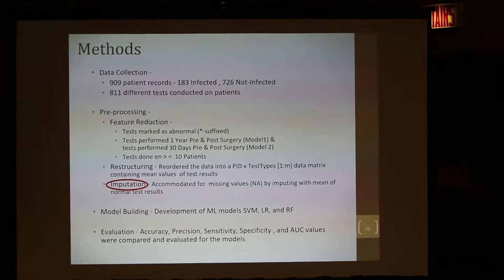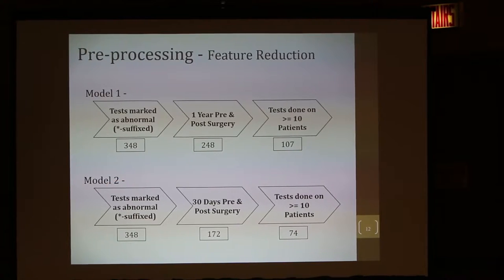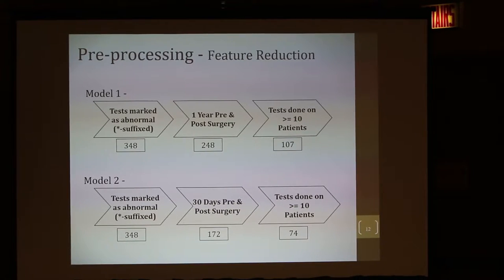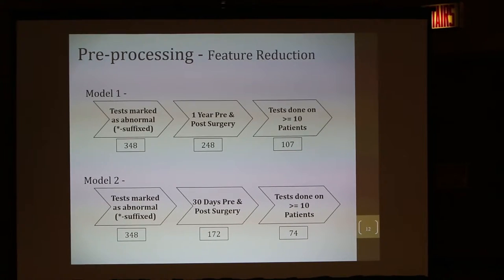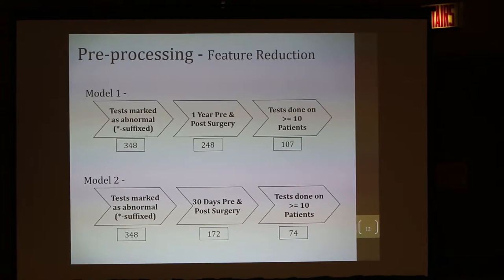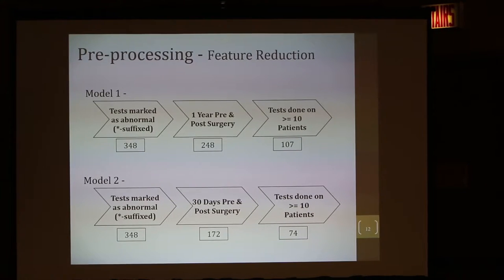So these are the methods we used — preprocessing with feature reduction and other things. Among the given 811 tests, we needed to reduce them to a manageable and clinically relevant number. Among those 55,000 results across 811 tests, only some had abnormal results. If a test is not giving any abnormal results, it's not discriminatory enough. So we knocked off all those tests which did not have any abnormal values at all.